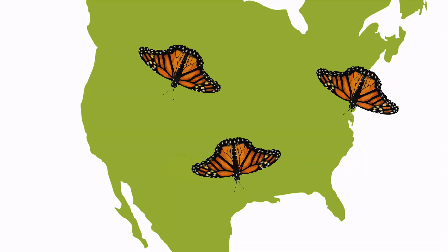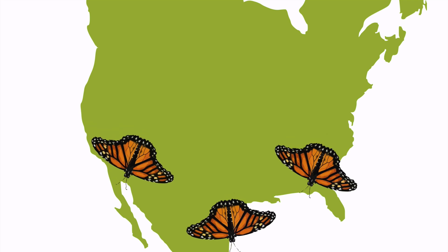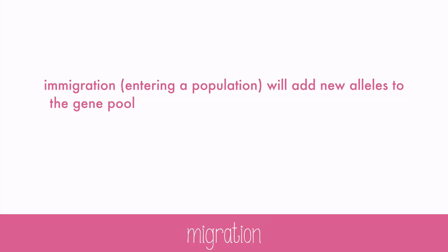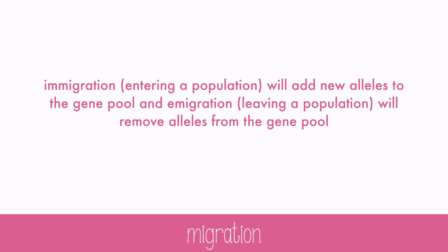Migration is another no-no if you're trying to keep a population from evolving. If an organism moves, it takes its genes with it. The movement of genes in and out of a population is called gene flow. One kind of gene flow is migration, which will cause new alleles to show up in populations that didn't have them before, and it removes alleles from the gene pool. Both of these will change the normal distribution of the alleles, which could lead to evolution.